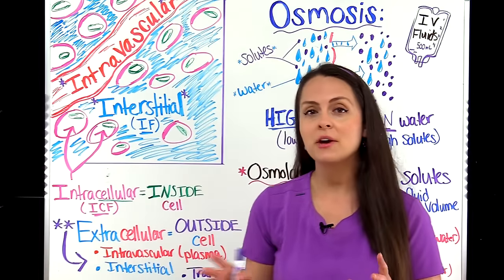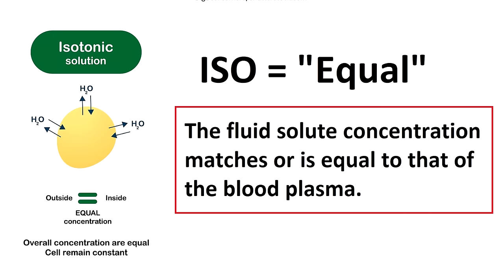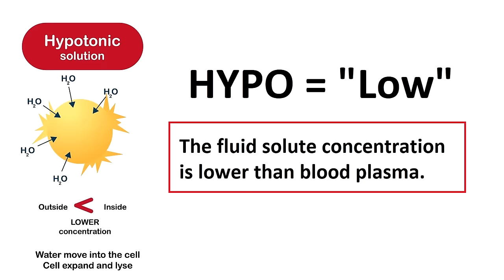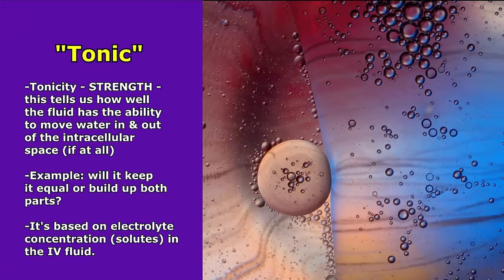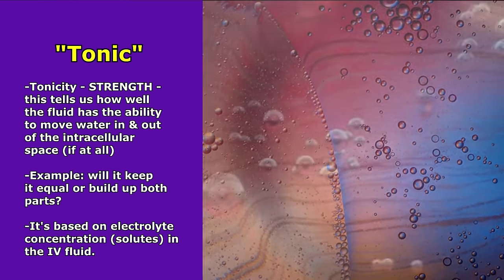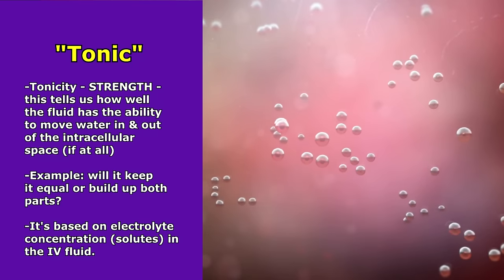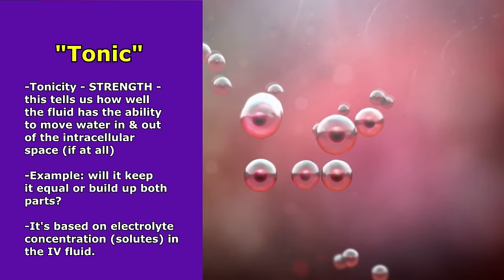There are three main types of IV fluids: isotonic, hypotonic, and hypertonic. Let the prefix and suffix of these names help you. "Iso" means equal — the fluid's solute concentration matches that of the blood plasma. "Hypo" means low — the fluid's solute concentration is lower than blood plasma. "Hyper" means high — the fluid's solute concentration is higher than blood plasma. The suffix "-tonic" refers to tonicity, which tells us how well that fluid entering the extracellular space will move water in and out of the intracellular space, based on the concentration of electrolytes in the IV fluid.